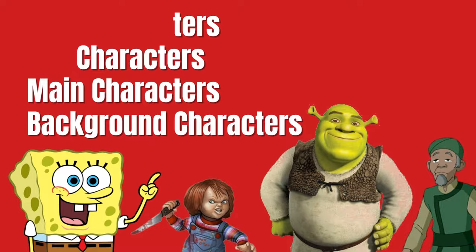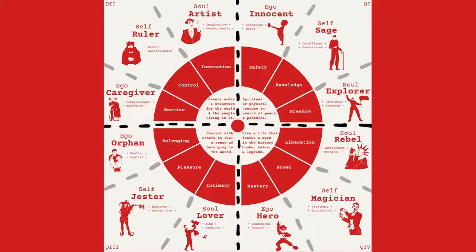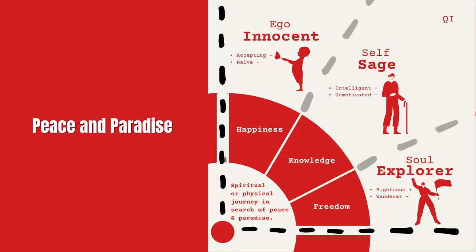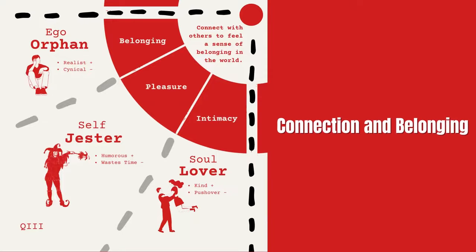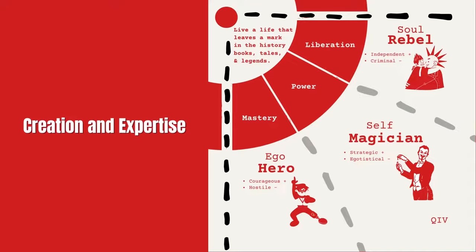Using the diagram, we can see that the 12 archetypes are divided into four quadrants based on their purpose in the story. The archetype's purpose in quadrant one is to find peace and paradise on their spiritual or physical journey. In quadrant two, the purpose is to create order and structure for the world and the people living in it. In quadrant three, the purpose is to connect with others to feel a sense of belonging. Finally, in quadrant four, the purpose is to live a life that leaves a mark in the history books, tales, and legends. Each archetype also falls under soul, self, or ego types.